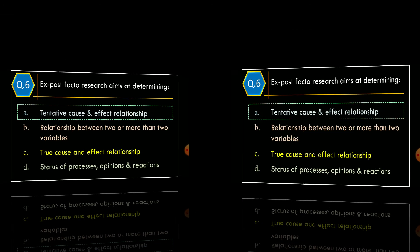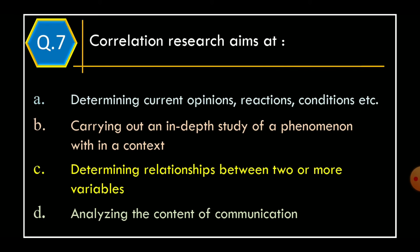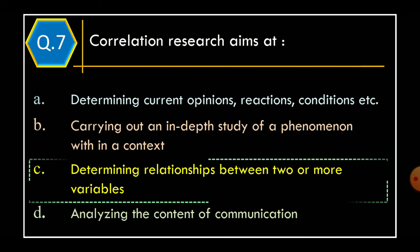Question 7. Correlation research aims at: Option A, determining current opinions, reactions, conditions, etc.; Option B, carrying out an in-depth study of a phenomenon within a context; Option C, determining relationships between two or more variables; Option D, analyzing the content of communication. The correct option is Option C, determining relationships between two or more variables.